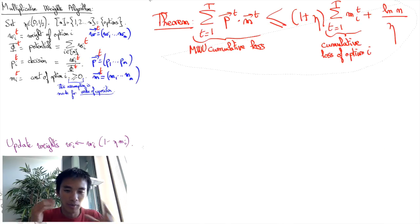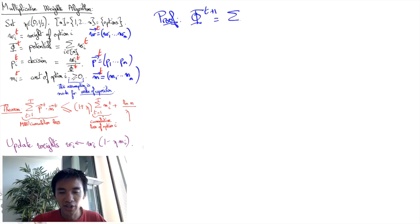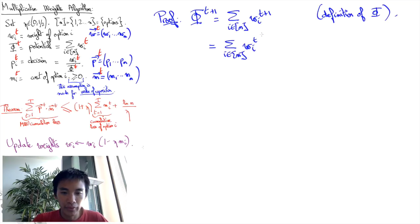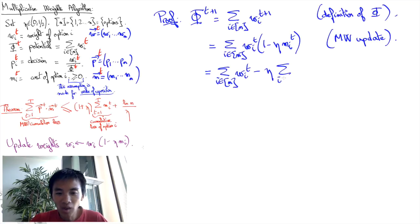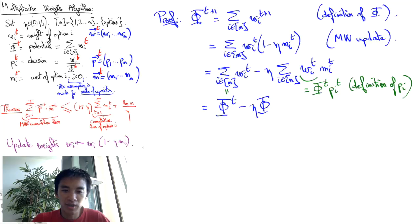Let us prove the theorem and maybe this will help you. The key idea of the proof is to focus on the potential function. The potential function at round t+1 is by definition the sum of weights at round t+1, which by the update rule is the sum of the weights at round t with the multiplicative update terms that involve the cost. Now, notice that each wi equals the potential function times the decisions pi by definition of the decisions. This proves that the potential function gets itself multiplied by a term that's pretty similar to the one that the weights get multiplied by.